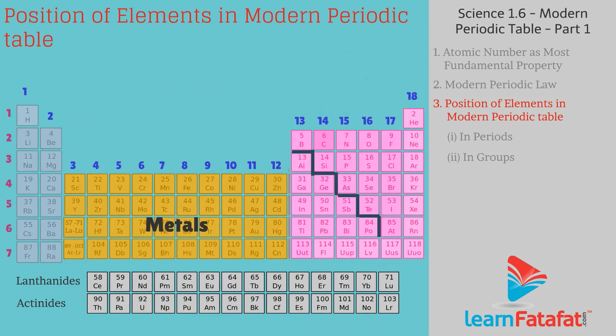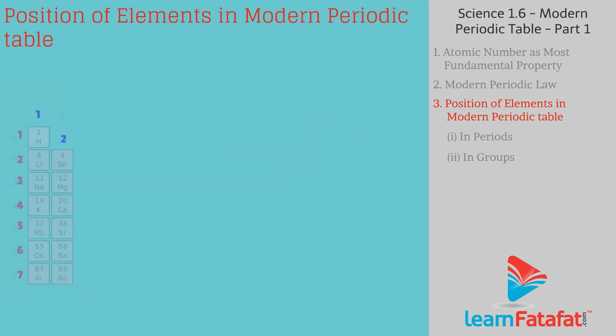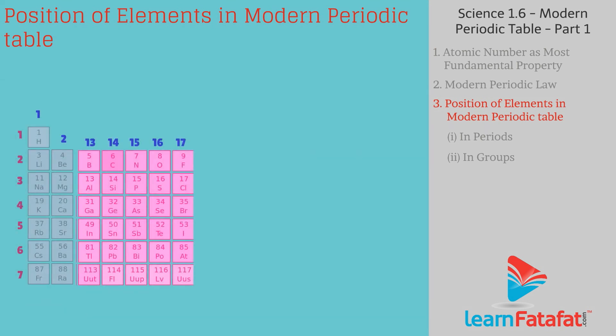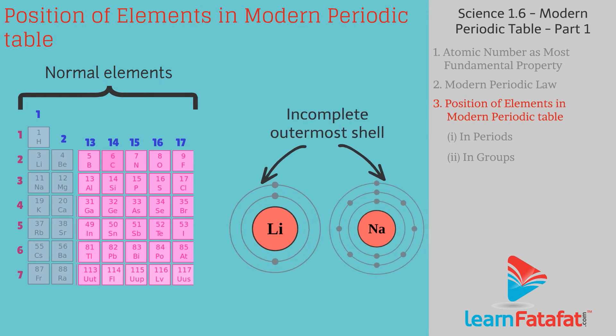Metals are arranged on left hand side of periodic table, while non-metals are arranged in right side. Elements of groups 1 and 2 and from 13 to 17 are called as normal elements. Their outermost shell is incomplete.